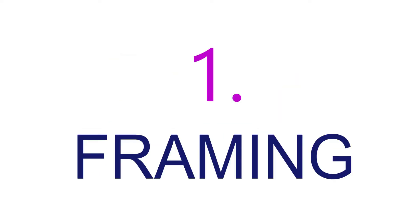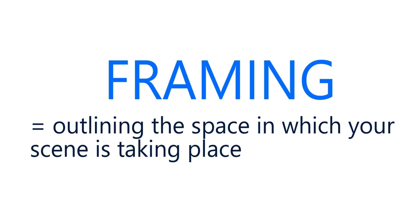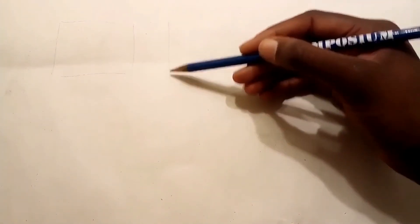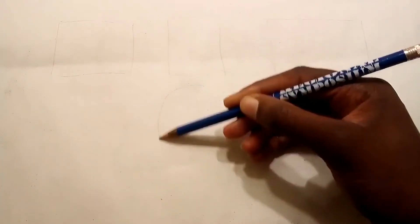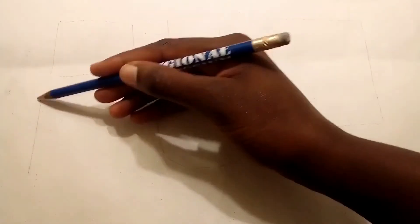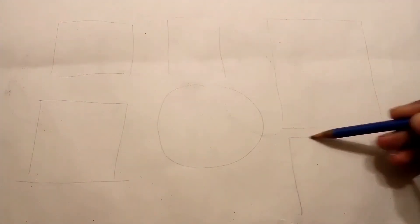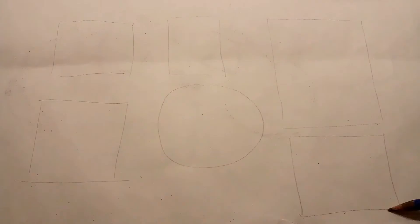First is framing. Framing is outlining the space in which your scene is taking place. In this step, you decide if you want your scene to take place within a rectangle, a square, a circle, or any other shape you desire. Most canvases and sheets of paper are rectangle or square, but you can frame your work however you want.